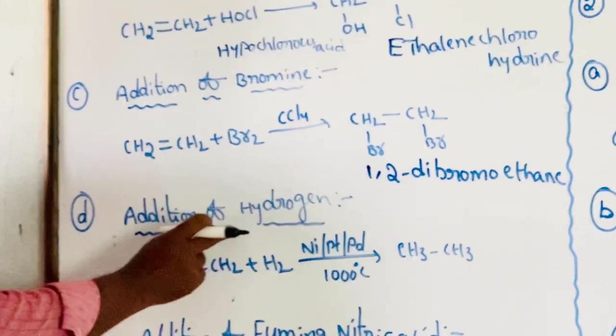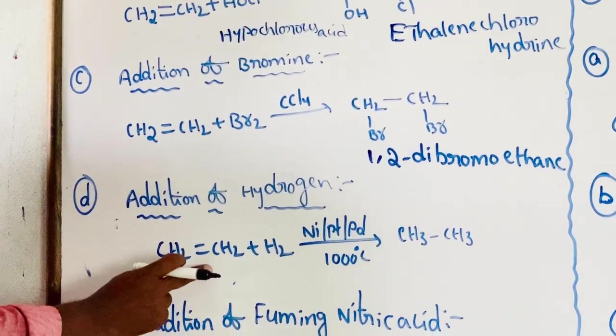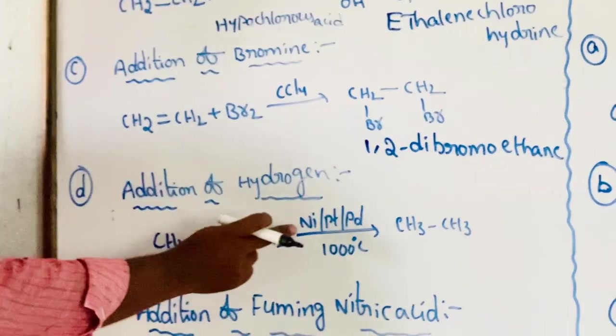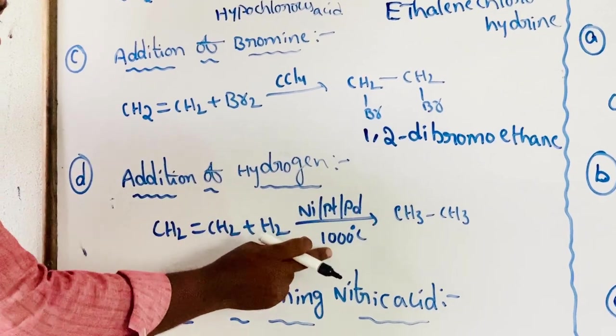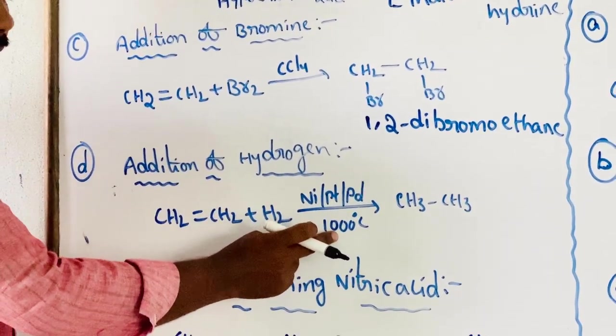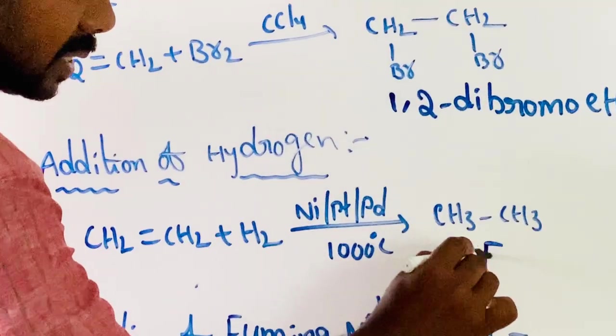Next, addition of hydrogen. Alkenes undergo hydrogenation in the presence of nickel, platinum, or palladium catalyst at 300°C to give alkanes, that is ethane.